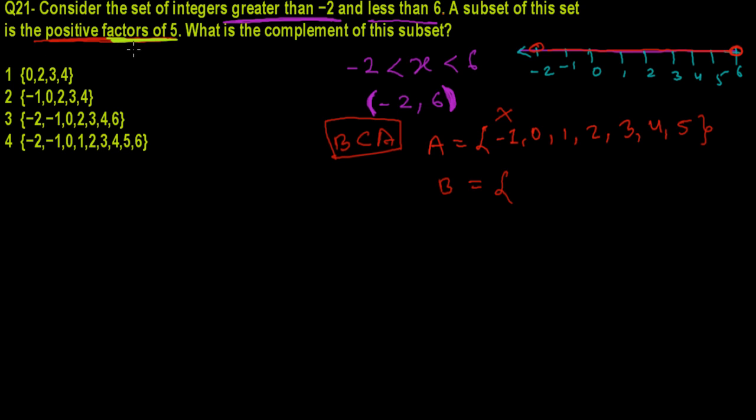And it should be factors of 5. So first you should answer what is factor. Factor is simply a number which can divide our given number without any remainder. So factors of 5 means those numbers which can divide 5 without any remainder, and that should be positive numbers from here.